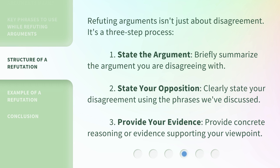Refuting arguments isn't just about disagreement — it's a three-step process. 1. State the argument: briefly summarize the argument you are disagreeing with. 2. State your opposition: clearly state your disagreement using the phrases we've discussed. 3. Provide your evidence: provide concrete reasoning or evidence supporting your viewpoint.